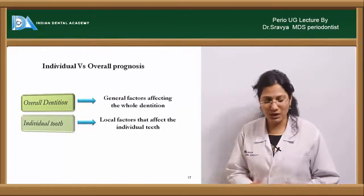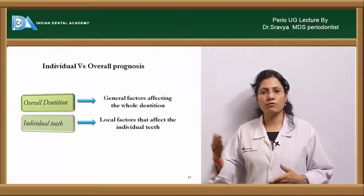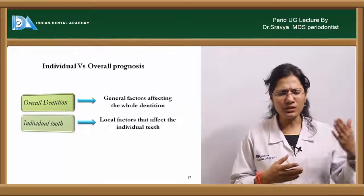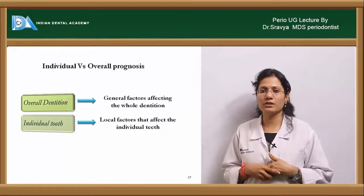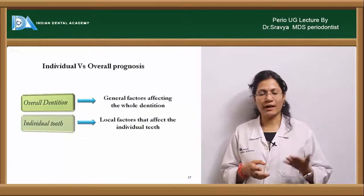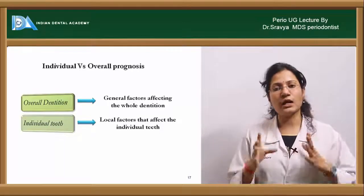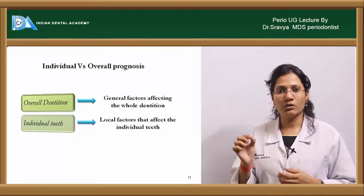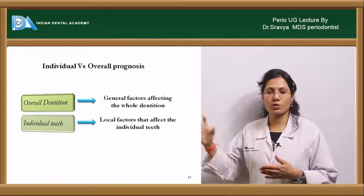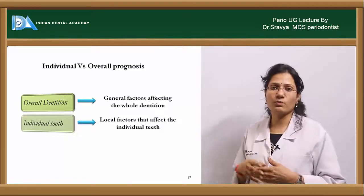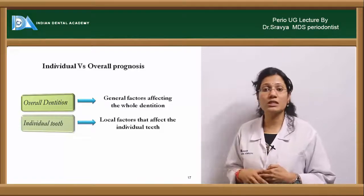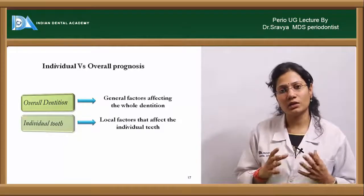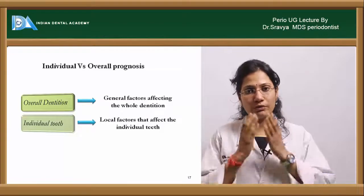For example, suppose you have grade one furcation in tooth 4-6, grade two mobility in tooth 3-1, and class one gingival recession in tooth 4-5, with the rest of the other teeth normal. Your individual tooth prognosis would be given separately — with respect to 3-1, with respect to 4-6, and with respect to 4-5. That would be individual prognosis. But overall prognosis means for the entire dentition. Though only three teeth are involved with the disease and the other teeth are in good condition, your overall prognosis would be for the entire dentition.